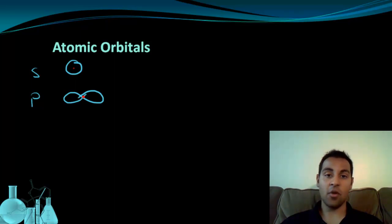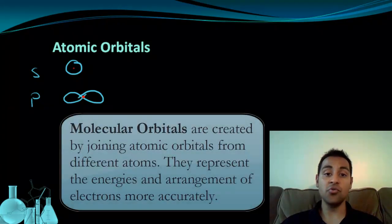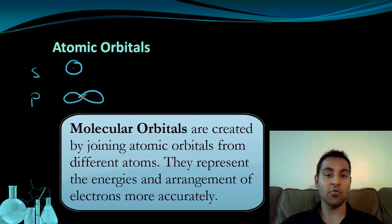When atoms form molecules, they do so by sharing electrons. So, if an electron from an s-orbital of one atom is shared with an electron from an s-orbital of another atom, they actually form a new orbital, what we call a molecular orbital.